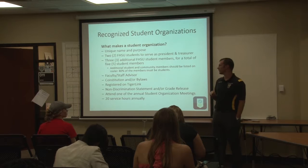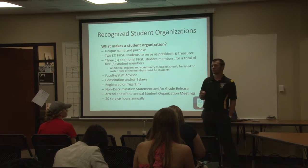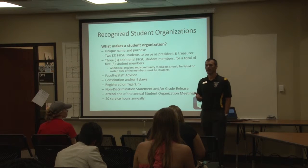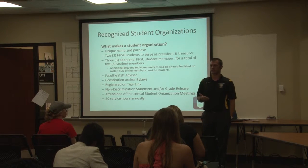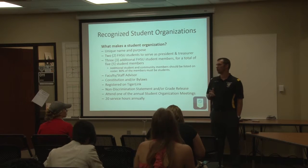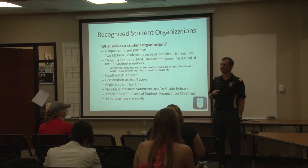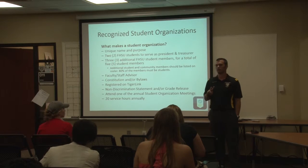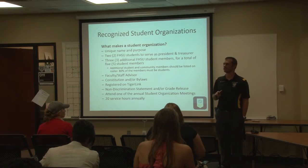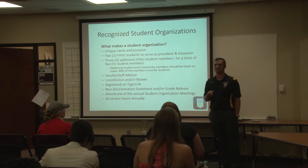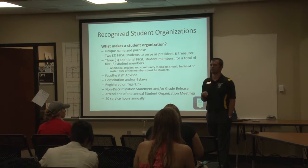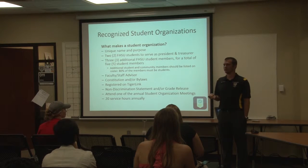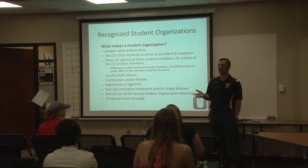You upload your constitution to TigerLink and register every single year so we can keep an accurate record of our student organizations and know who the current contact people are. When you register, the president, treasurer, and advisor all have to sign off on the non-discrimination statement. The two officers have to release their grades because presidents and treasurers must maintain at least a 2.0 cumulative GPA. You also have to attend one of the annual student organization meetings — so you've completed that aspect by being here today.